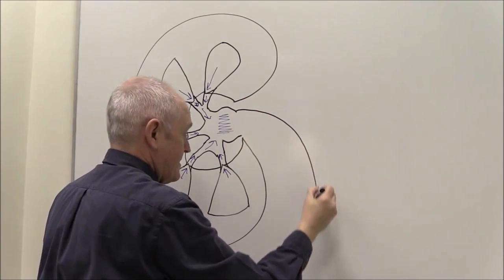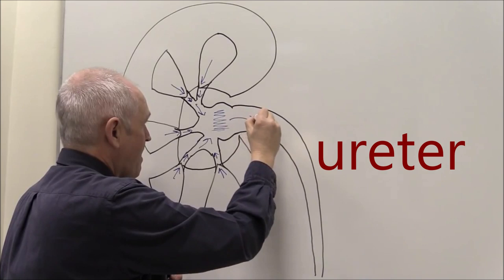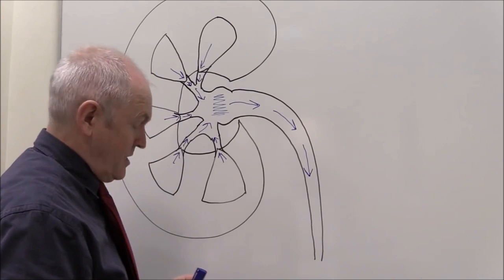And then the renal pelvis is going to exit the kidney at the start of the ureters. So the ureter is going to go from the renal pelvis down the ureter. And the ureter has muscular peristaltic walls taking the urine down to the bladder.